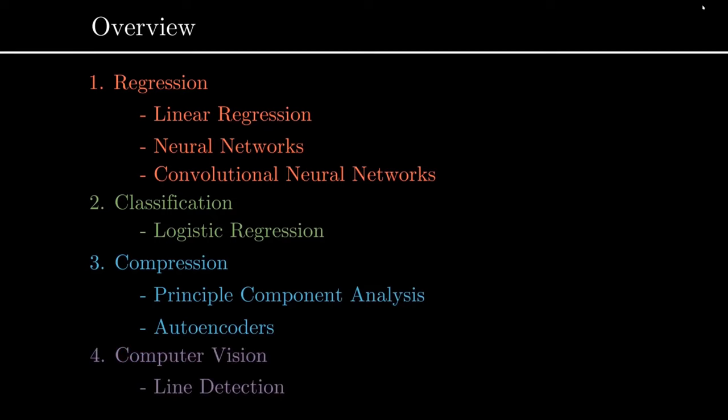Finally, if we have time, I'll go over some computer vision techniques, for example doing line detection in images. Each of these four cases we'll go over the common methods and a few simple applications, and also some physics examples along the way. It's worth noting that I've put neural networks in regression here — some people might complain that neural networks can be used for all of these tasks, but I'll just be introducing neural networks from the context of regression.